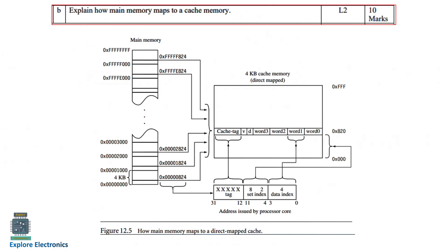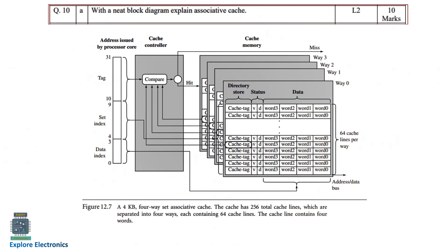The next question is: explain how main memory maps to cache memory. The main memory ranges from 0 to FFFFF, and there is a 4KB direct-mapped cache. You need to explain how the mapping works with this diagram. Then, with a neat diagram, explain associative cache. A 4KB four-way set associative cache is shown — it has 256 total cache lines separated into four ways, each containing 64 cache lines, and each cache line contains four words. You need to explain how this associative cache works.